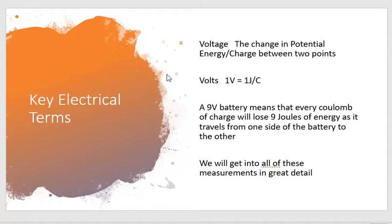The next term we need to understand is voltage — and we'll get into this in much more detail when we talk about electricity specifically. Voltage is a complex topic that needs time, kind of like acceleration in the first half of the year. But voltage is the change in potential energy per charge between two points. There's potential energy given to charges, and we're comparing two places — does it have more energy or less? Voltage is measured in volts, and since it's energy per charge, a volt equals a joule per coulomb.